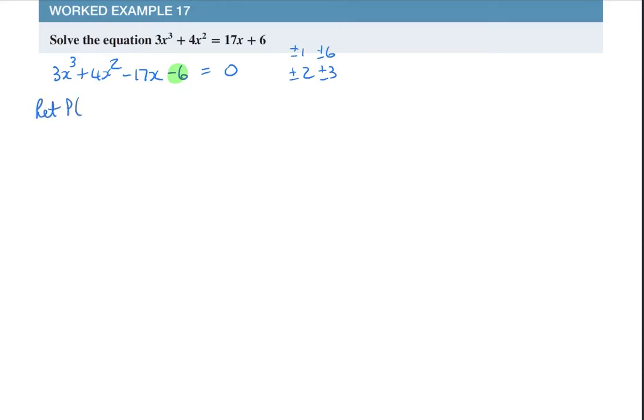I'm going to say, let P at x equals 3x cubed plus 4x squared minus 17x minus 6. Start with the easiest ones, try 1. If I put in 1 there, you don't have to show all of this working, but this is what you do. 4x squared minus 12 times 1, take away 6, that equals 3 plus 4 is 7. 7 take away 12 is negative something and then take away another 6, so that is not equal to 0.